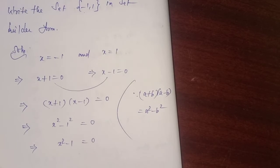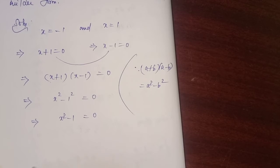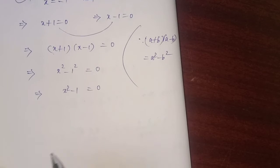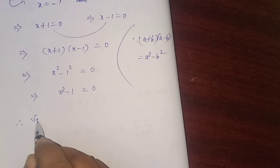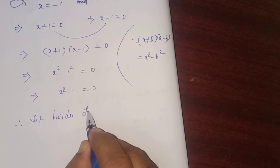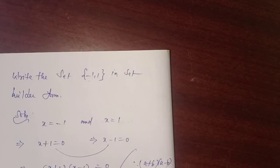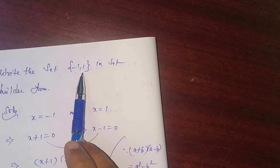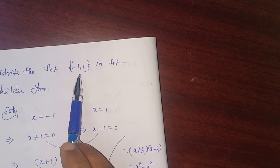Now, how to write the set in set builder form? Therefore, set builder form: -1 and 1, in general you can say that they are real numbers, obviously correct.